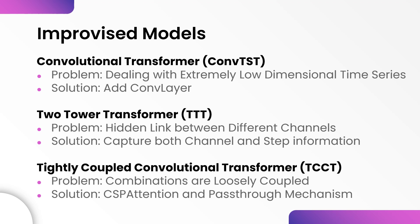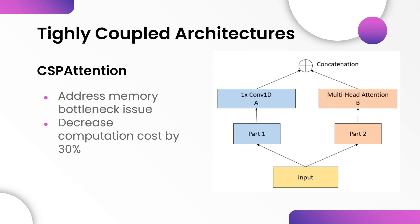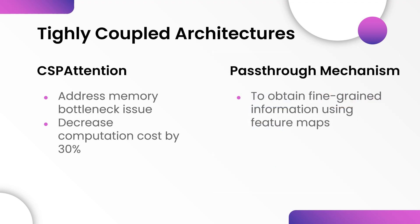Lastly, it is noticed that the combination of convolutional neural network with transformer is loosely coupled and does not make full use of CNN. To address this, CSP attention and a pass-through mechanism is proposed. CSP attention is used to address the issue of memory bottleneck and computational efficiency of multi-head attention. The input is split into two parts, where the first part is passed into a convolutional layer and the second part is passed into the multi-head attention, as seen in the figure. This decreases the computational cost by 31.25%. The pass-through mechanism takes feature maps from prior networks and integrates them with a final feature map to obtain fine-grained information.